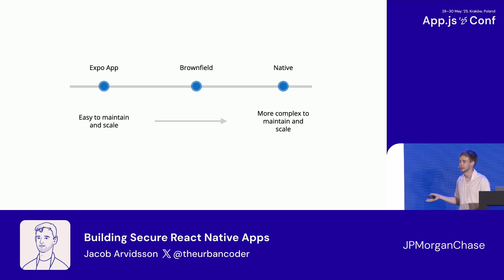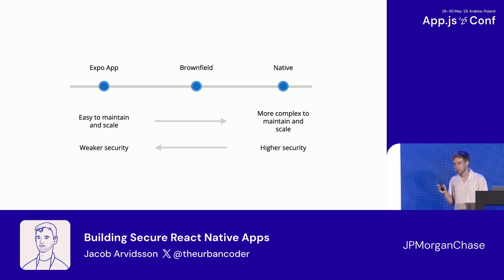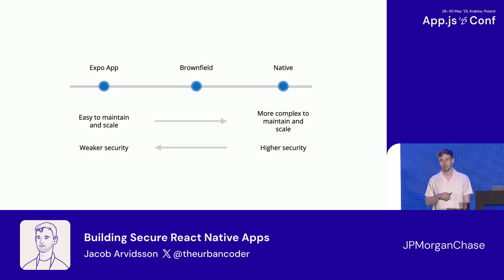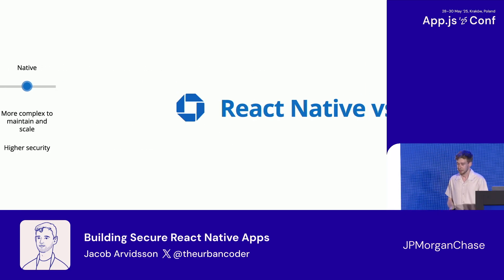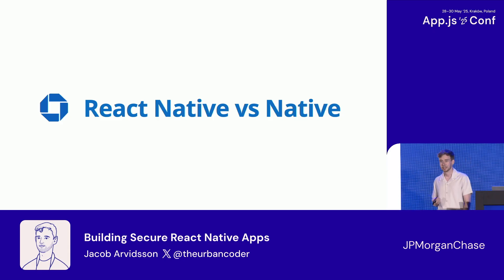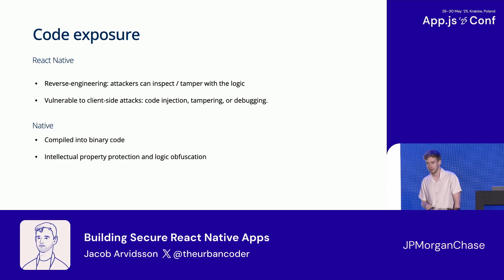When looking at that graph it's easy to think you'd go with an Expo app, but when it comes to app security it's actually a bit reversed — JavaScript-based applications have much weaker security, while native ones have a lot more security features. Let's look at that in more detail.